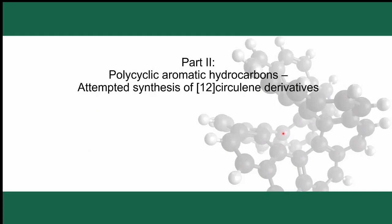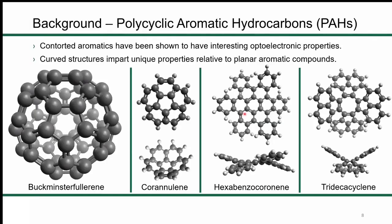I'd like to move into my synthetic work, which initially focused on polycyclic aromatic hydrocarbons of the circulene family — contorted aromatics. These have been shown to have very interesting optoelectronic properties. The most famous is C60, or buckminsterfullerene, but other fullerene fragments are known to have very similar properties. Though they aren't quite as good as C60, they're generally more functionalizable, more soluble, and easier to obtain. Hexabenzocoronenes and corannulene are quite popular in the field.